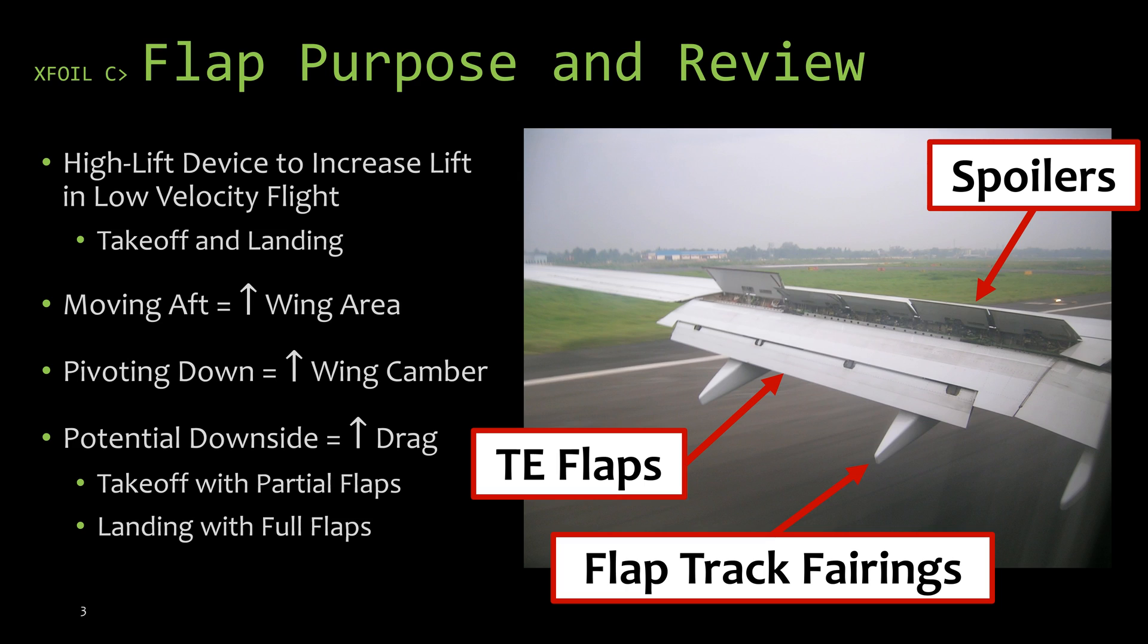The idea behind a flap is that you are changing the shape of the airfoil temporarily. Flaps usually change one of two things: they can either move backwards, which increases the wing area because you're effectively increasing the chord, or they can hinge and pivot downward, which is essentially changing the camber of the wing.